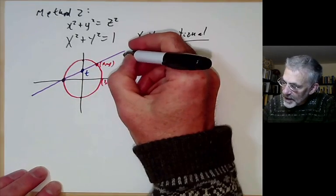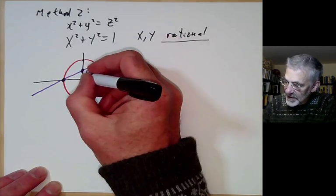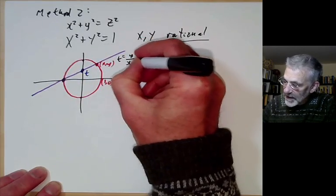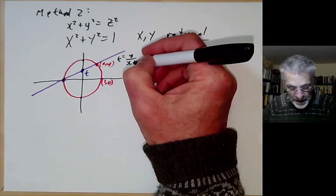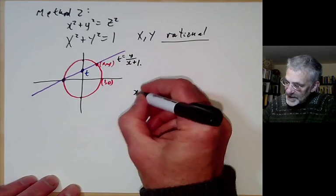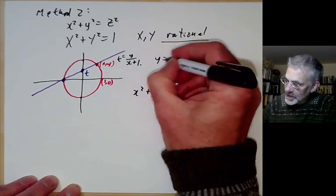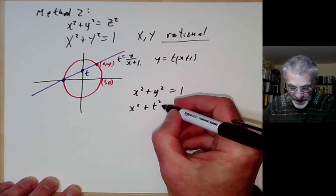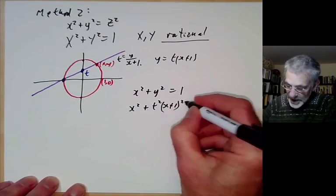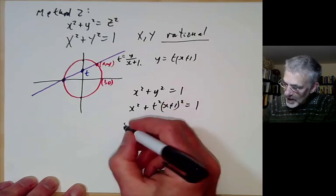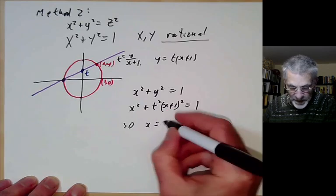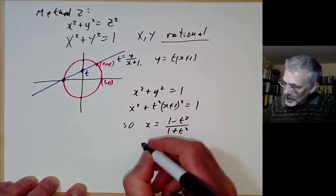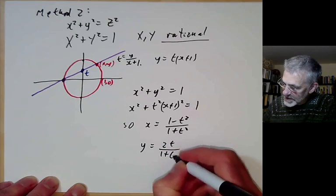The slope t of this line is y over (x plus 1). Knowing x squared plus y squared equals 1, if we substitute y equals tx plus t, we get x squared plus t squared times (x plus 1) squared equals 1. Solving, we find x equals (1 minus t squared) over (1 plus t squared), and y equals 2t over (1 plus t squared).